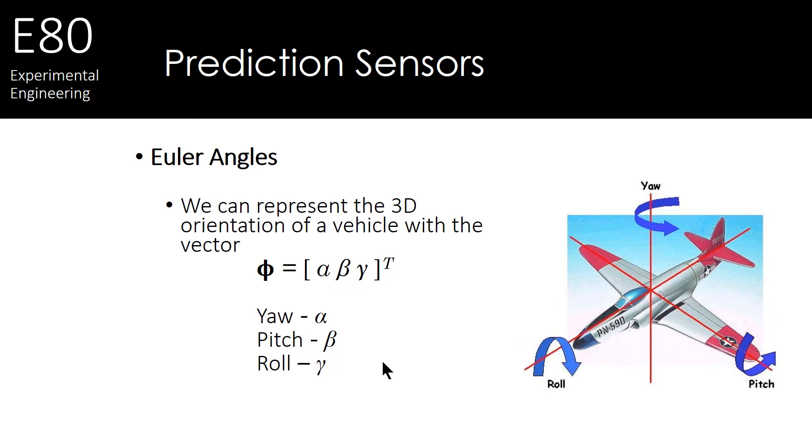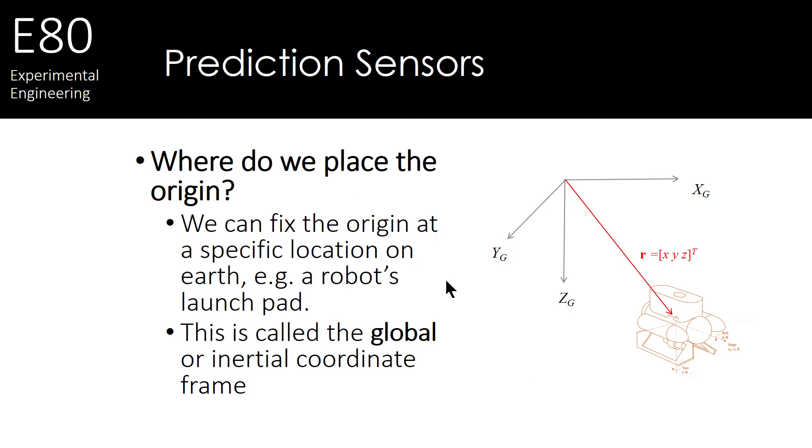But we also have to represent the vehicle or robot with angles. In this case, we're going to use orientation angles, yaw, pitch, and roll, alpha, beta, gamma. This is another vector. So we've got XYZ, alpha, beta, gamma, so far, to represent our state of our robot.